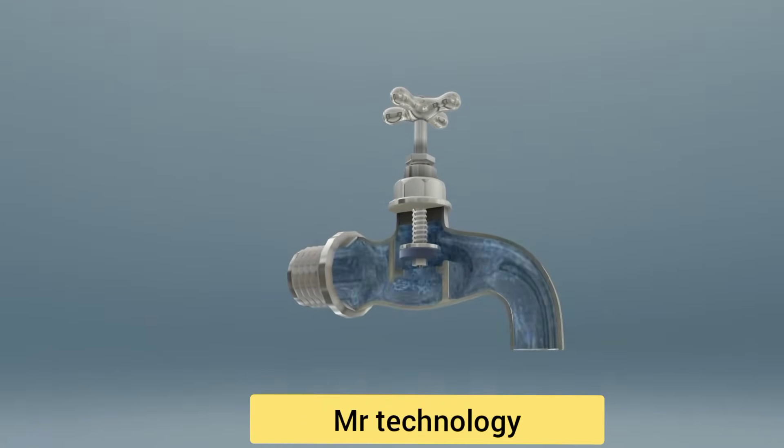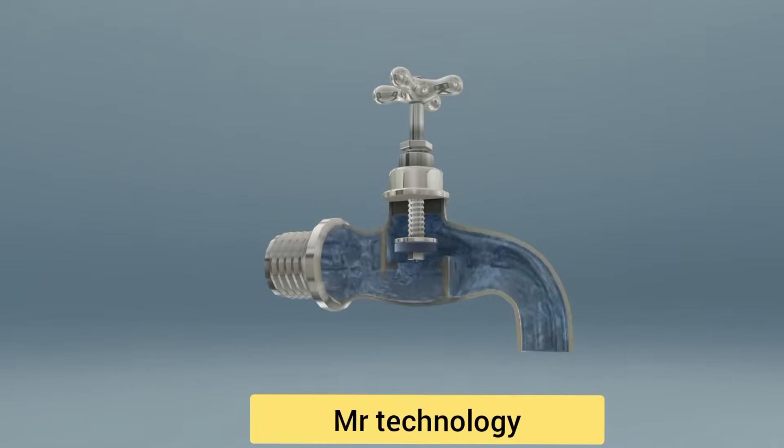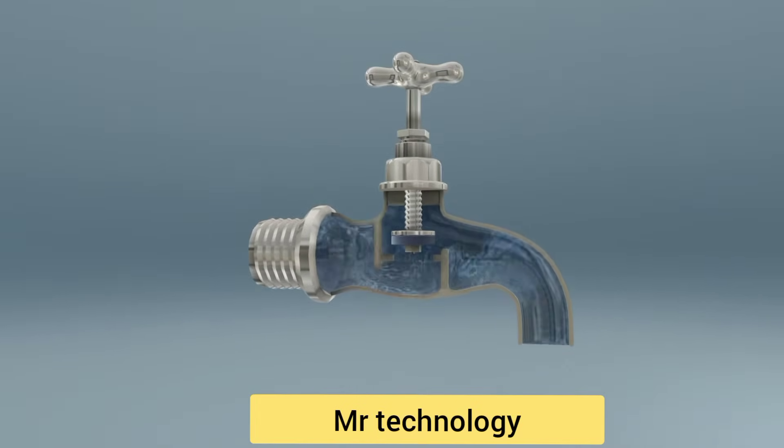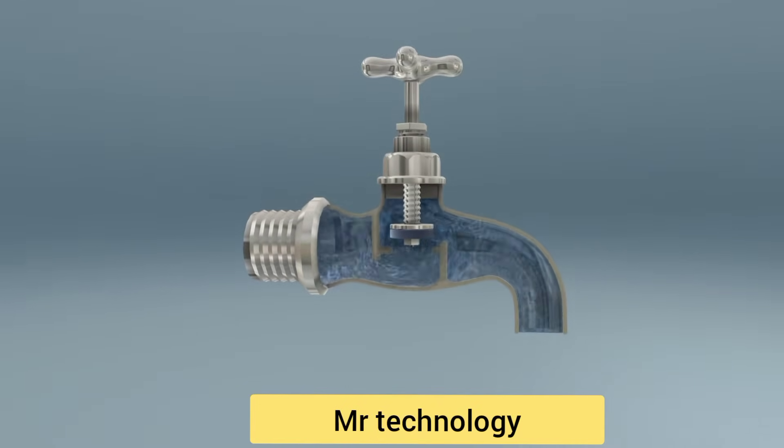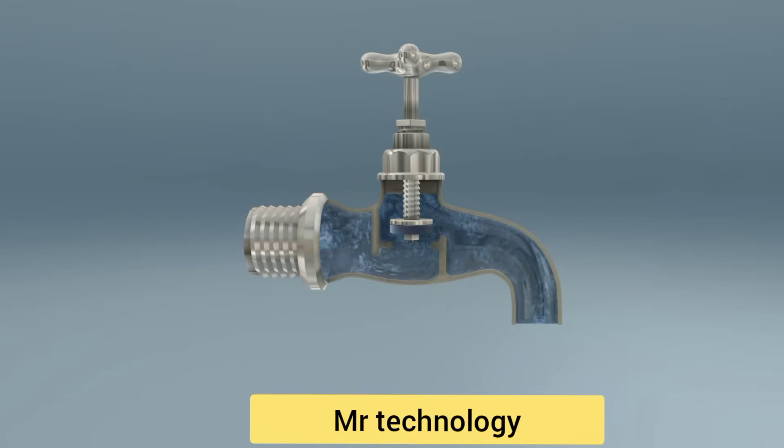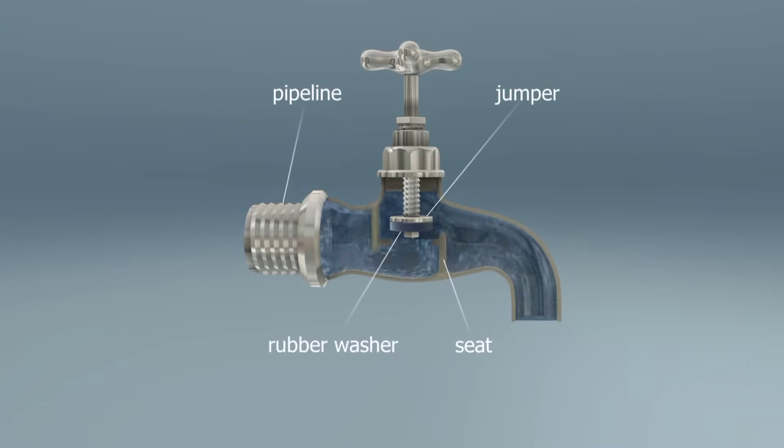In a traditional tap, the jumper is fastened to a screw together with a rubber washer. When you turn the tap on, the screw rises, lifting the jumper and allowing the water to run out through the spout.